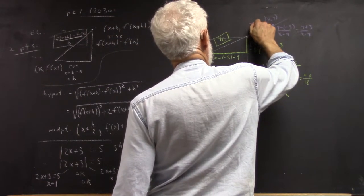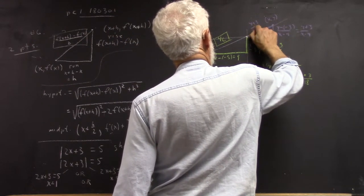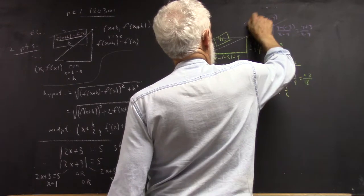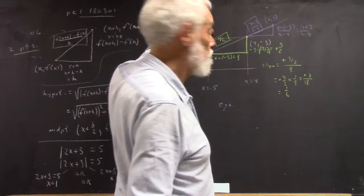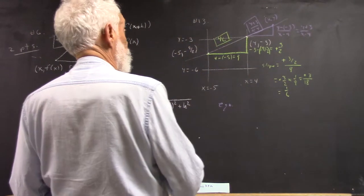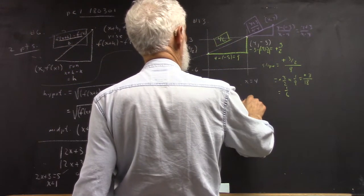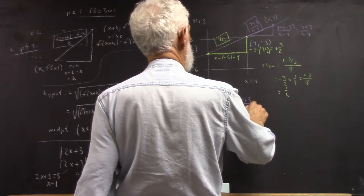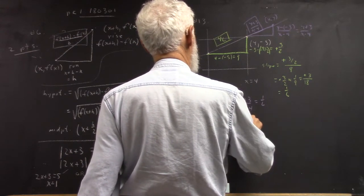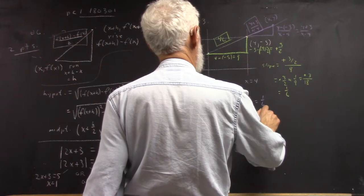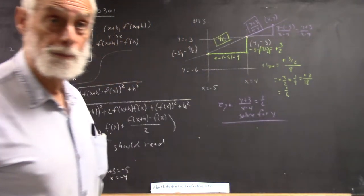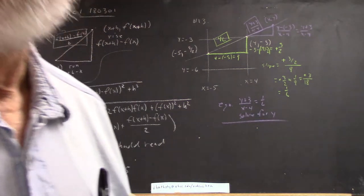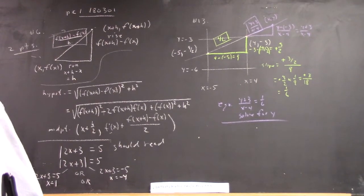So your equation... Well, let's say y plus 3 over x minus 4. It's the same line, so the slope here has to be the same as the slope here. So your equation is y plus 3 over x minus 4 equals 1 sixth. Then I prefer you solve for y. Okay? So there's that problem.